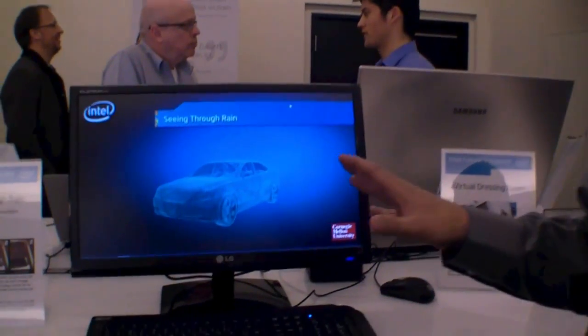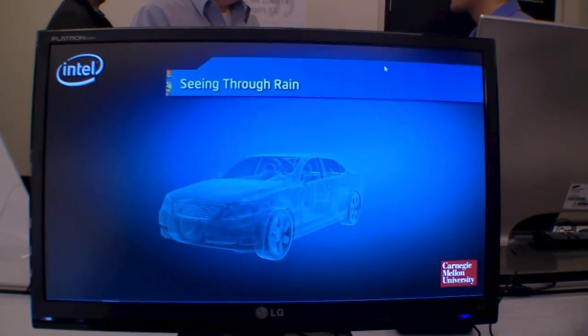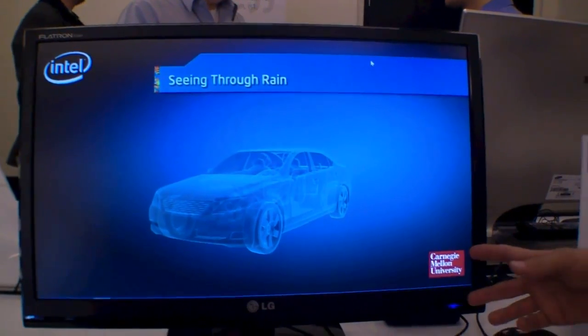Hello, my name is John Tomkins. I'm with Intel Labs. Today we're showing our Seeing Through Rain project. This is a research project being done with a relationship between Intel Labs and Carnegie Mellon University.